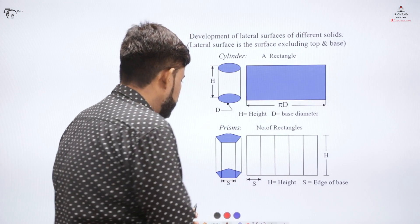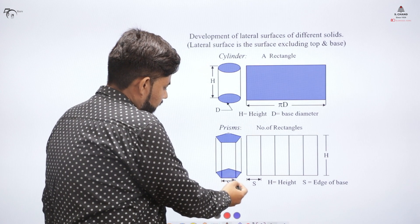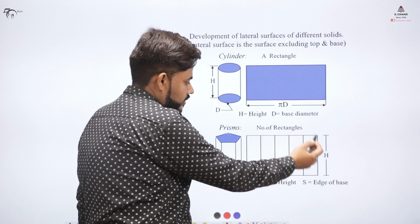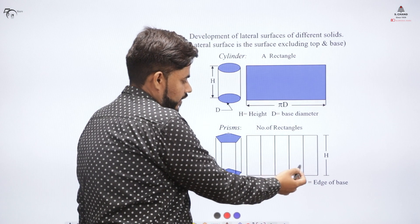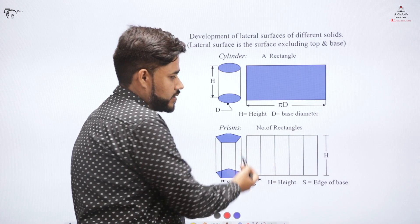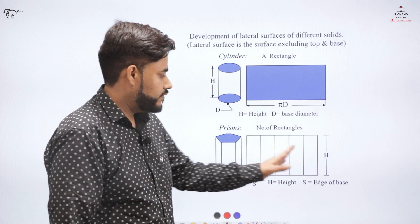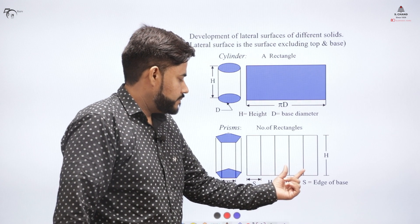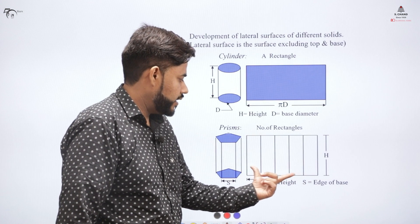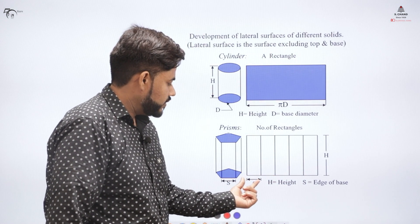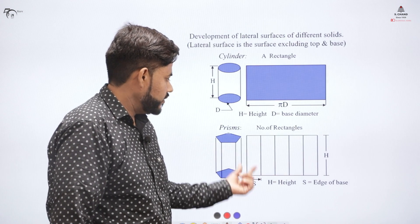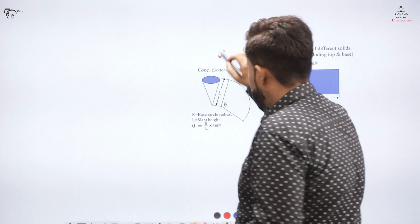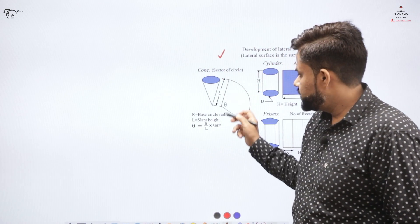For a prism with a pentagonal cross-section, the development is a series of rectangles. There are five rectangles because it is a pentagonal prism with five surfaces. The first length of each rectangle is indicated by the side length of the prism, and the five sections make up the entire unfolded length.